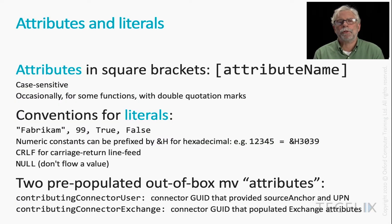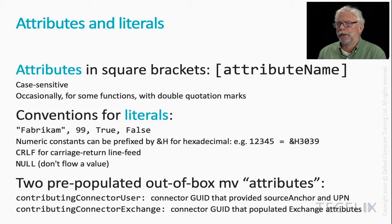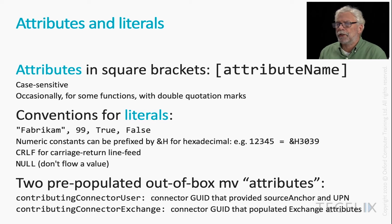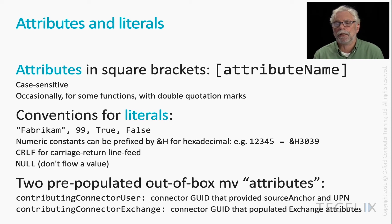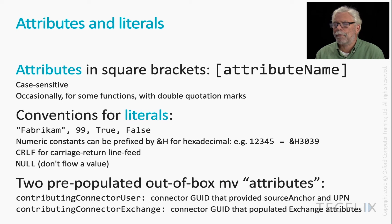Attributes and literals: attributes are always included in square brackets, and don't forget they're case sensitive. Occasionally, just occasionally, we've seen for some functions double quotation marks used as well — there's no explanation or documentation for this that we can find. The conventions for literals are probably as you would expect: if it's a string, it goes in double quotes; numbers are done like numbers; and you can have true and false, capitalised. Numeric constants can be prefixed by ampersand-H if you want hexadecimal. And then you can have CRLF for carriage return and line feed, and null meaning don't flow a value. I have more to say about null in a little while.